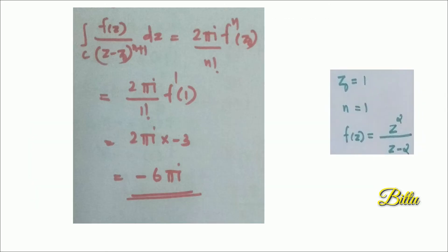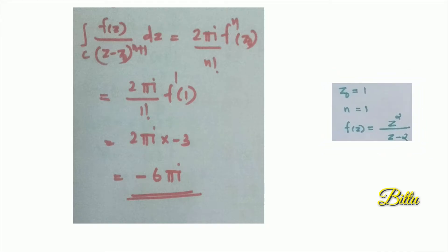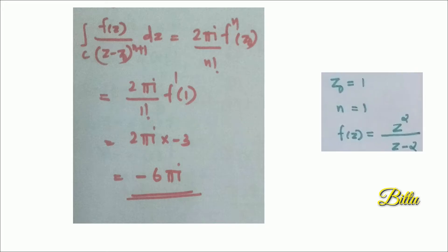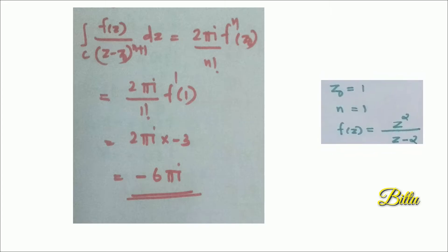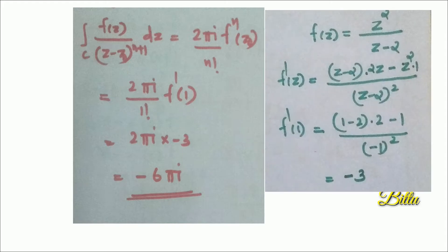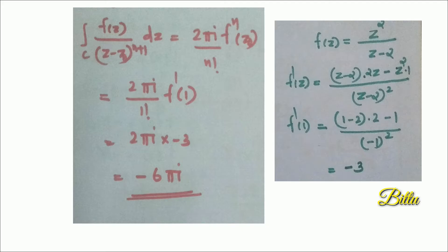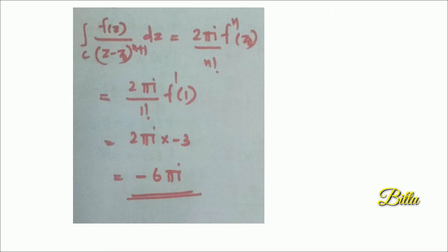By Cauchy's Integral Formula for derivatives, the integral over C of f(z) by (z−z₀)^(n+1) dz equals 2πi divided by n factorial times f^(n)(z₀). Replacing N and Z₀ gives 2πi divided by 1 factorial times f′(1). We have f(z) = z²/(z−2), so applying the quotient rule and putting z = 1 gives f′(1) = −3. Replacing in the formula: 2πi × (−3) = −6πi. Therefore the answer of the given integral is −6πi.